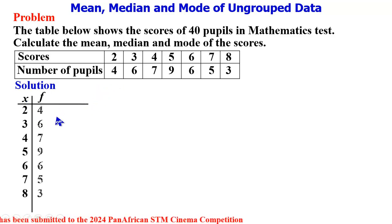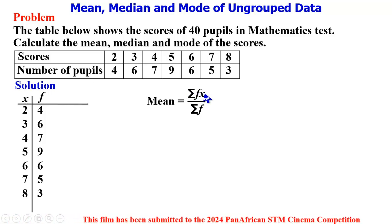We start with the mean of the scores. The formula for calculating mean is sigma fx over sigma f. This sigma means summing up the product of the frequency and the scores, dividing the result by the sum of the frequencies.